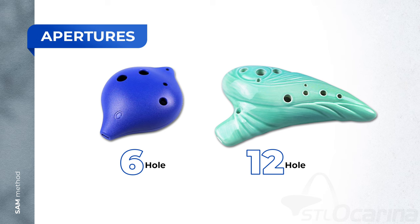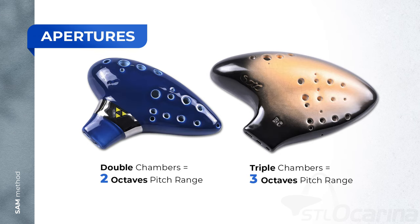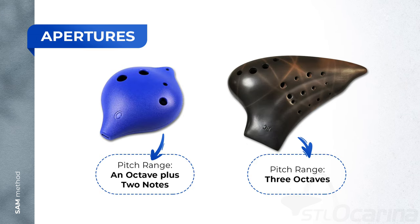Among the most common ocarina types are the six-hole and twelve-hole varieties, each offering their own unique musical possibilities. However, there are also ocarinas with double and triple chambers, each with a staggering range of two or even three octaves respectively. Understanding the significance of these apertures will help inform you which ocarina will be best suited for your unique needs.